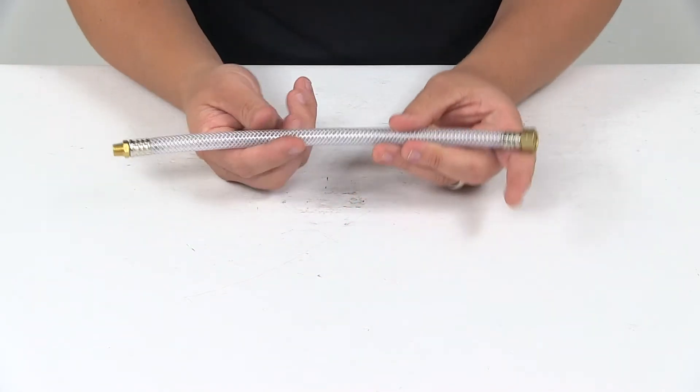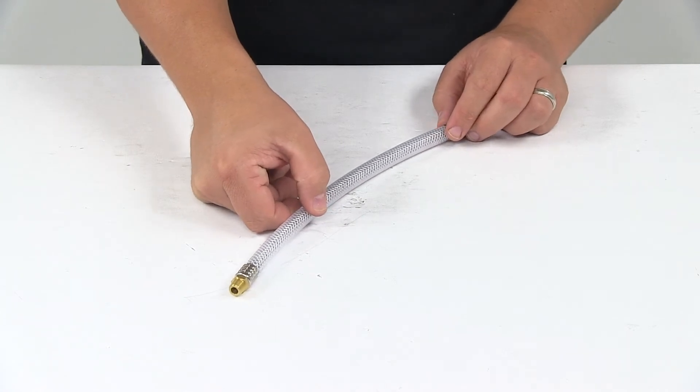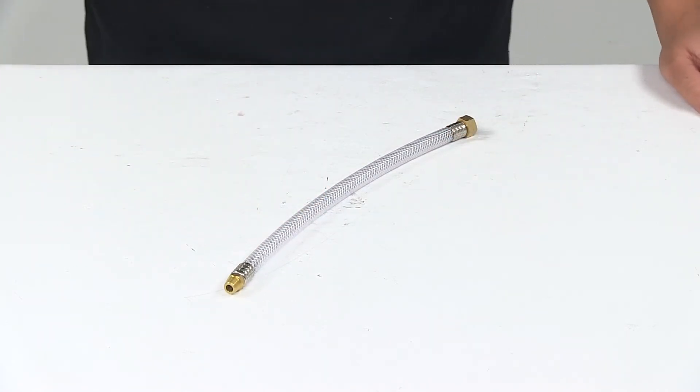The product is made in the USA. That's going to do it for today's look at the replacement garden tub waterway hose.